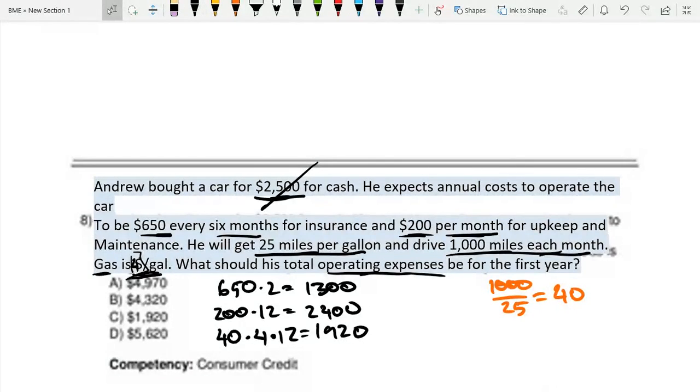Now if I add all of these up, this should come out to $5,620, which is option D. Anyways, thank you for watching. I hope you found this video helpful. Thank you and goodbye.